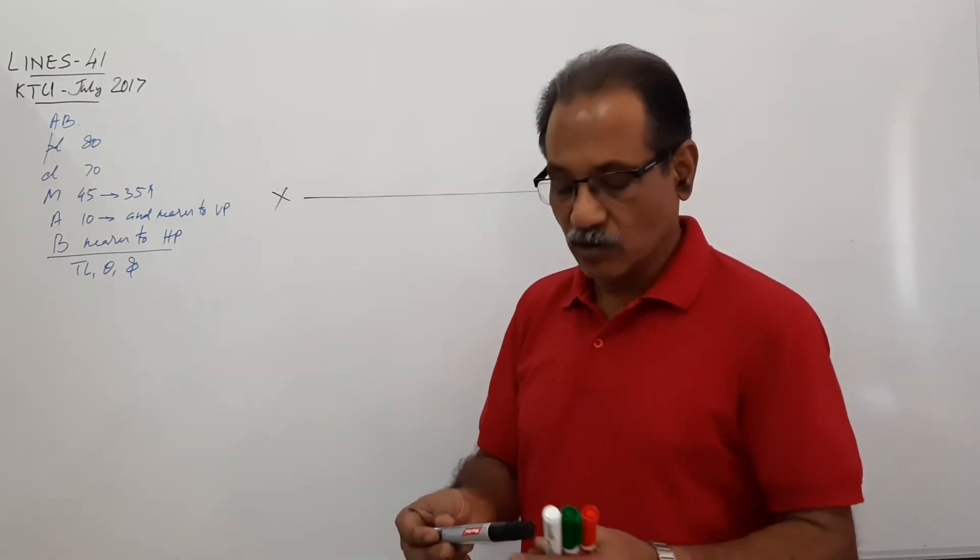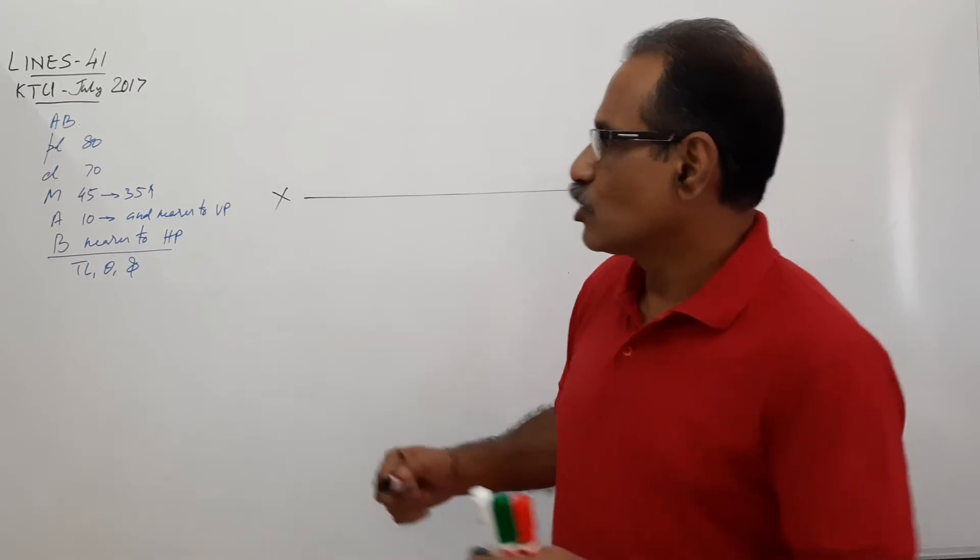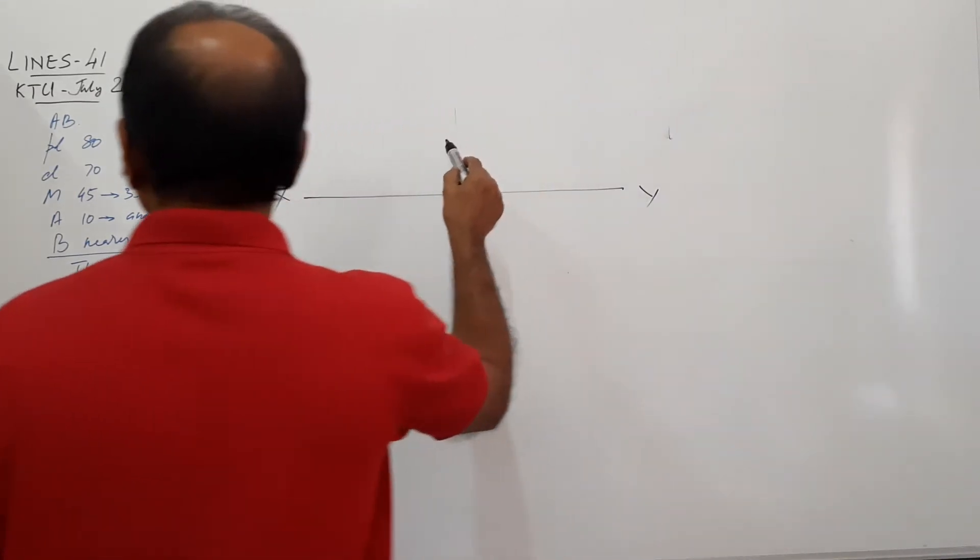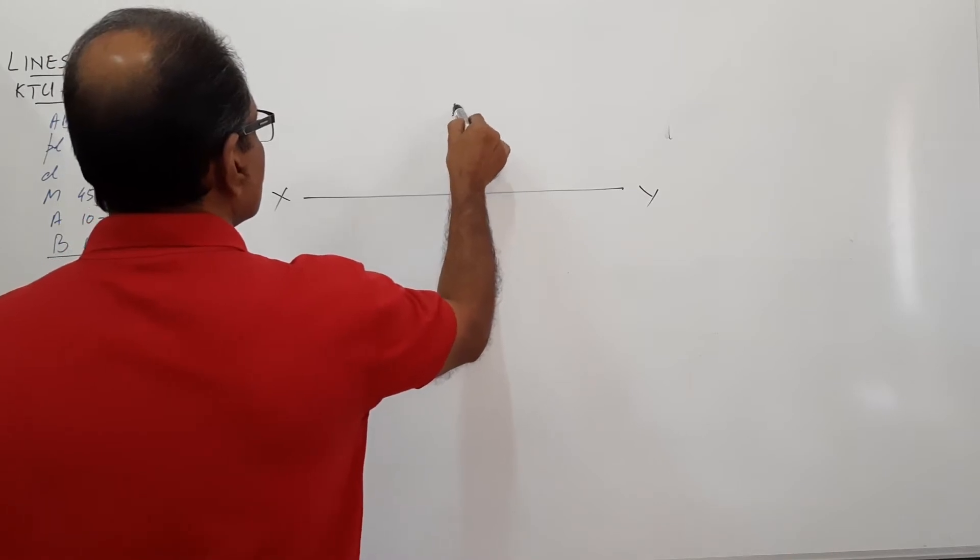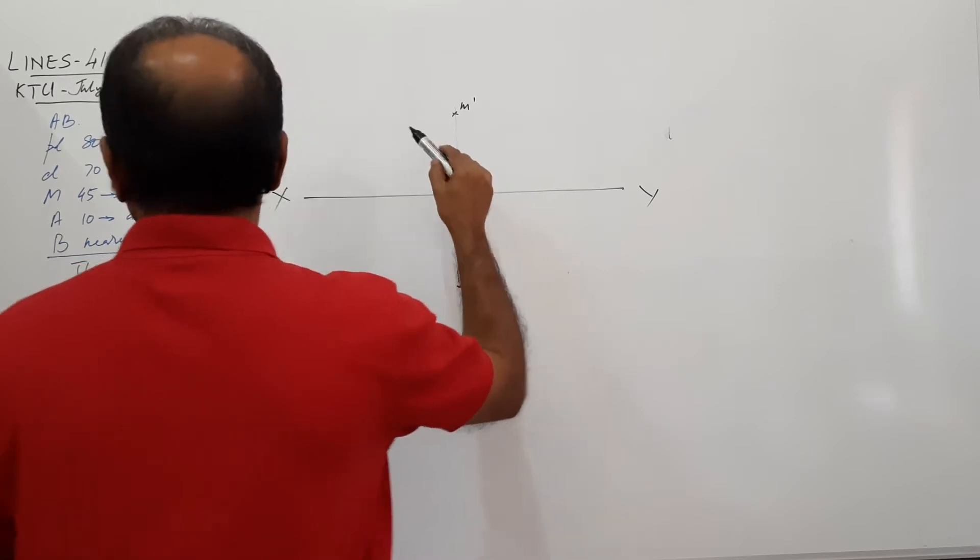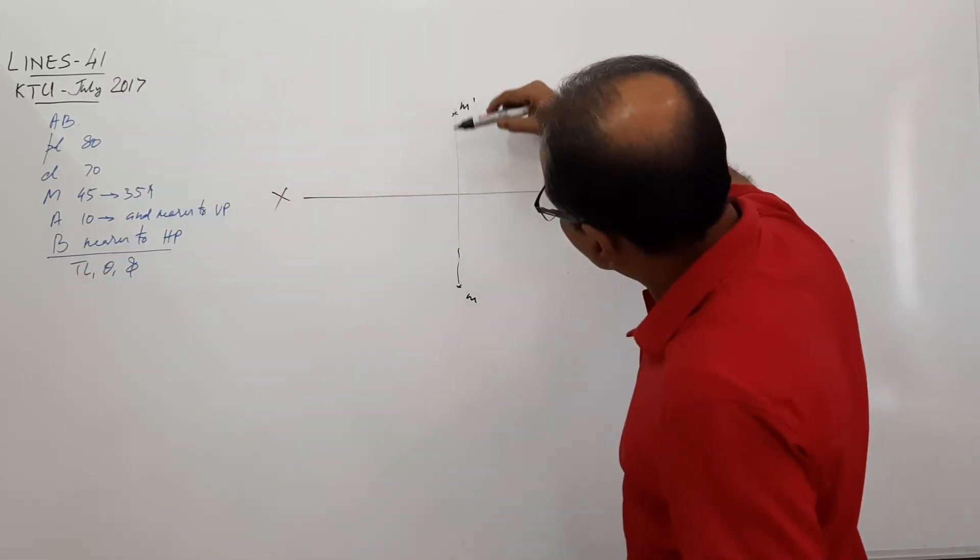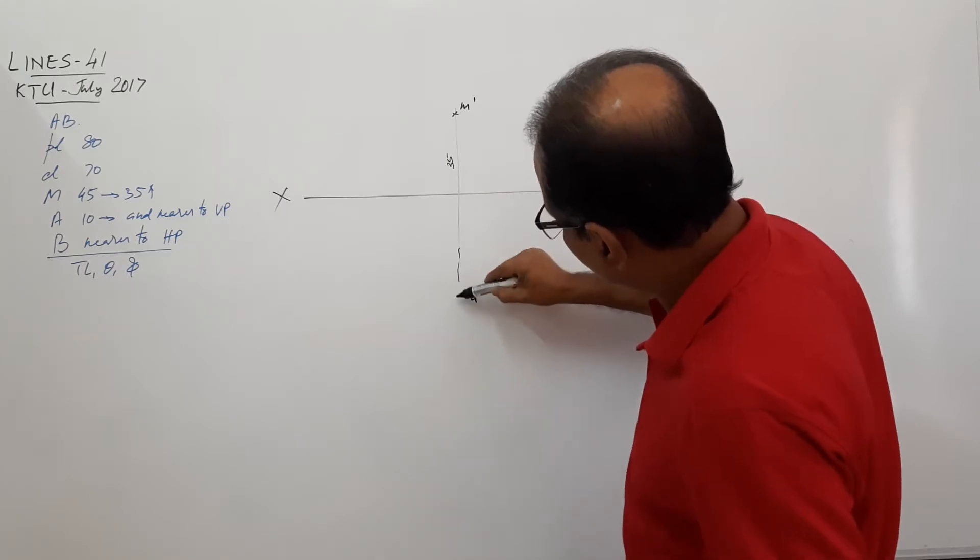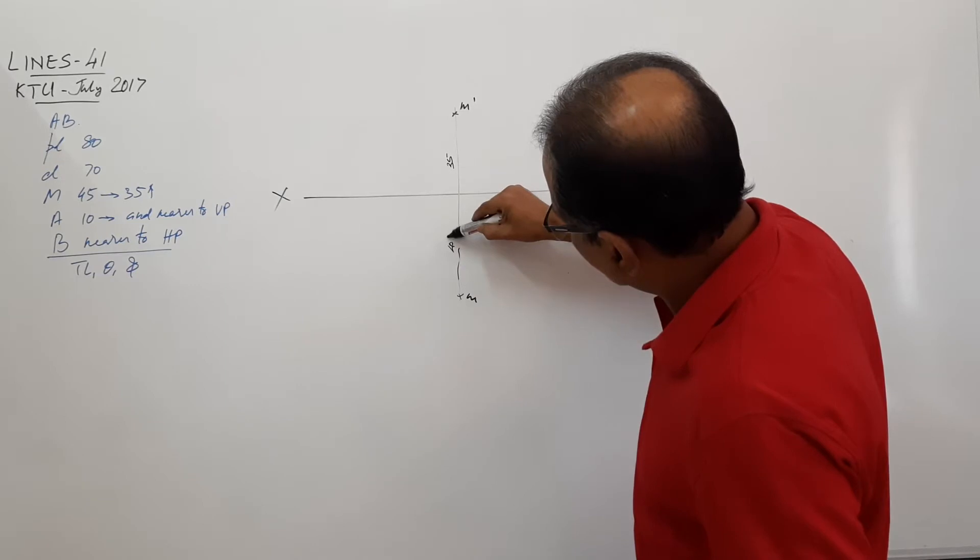This must be solvable. Look at M dash and M. M dash, M. 35, 45.